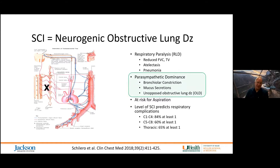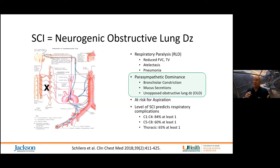Most of the time we see young men with spinal cord injury. We don't typically think of restrictive or obstructive lung disease in this population. However, the nervous system changes — particularly parasympathetic dominance and somatic dysfunction — contribute to obstructive and restrictive lung disease respectively.